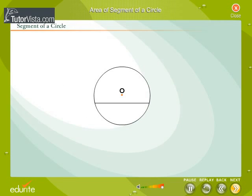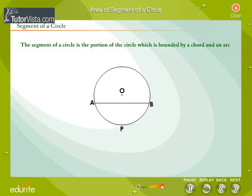O is the center of a circle. AB is a chord of the circle. APB is an arc of the circle. Observe the portion of the circle which is bounded by the chord and the arc. This portion of the circle is called the segment of a circle.